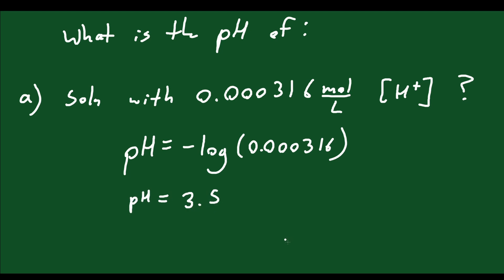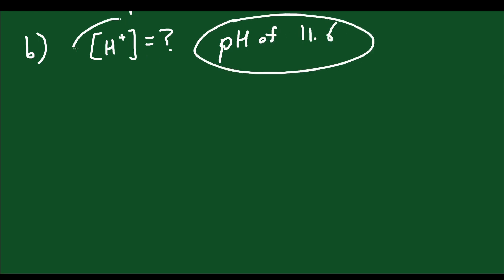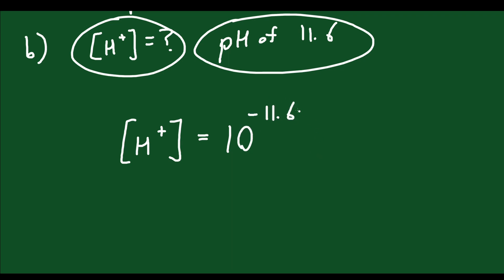That's the pH of the solution. Now, what if you want to find the hydrogen ion concentration of a solution with a pH of 11.6? The concentration equals 10 to the negative 11.6, which equals 2.512 times 10 to the negative 12 moles per liter.